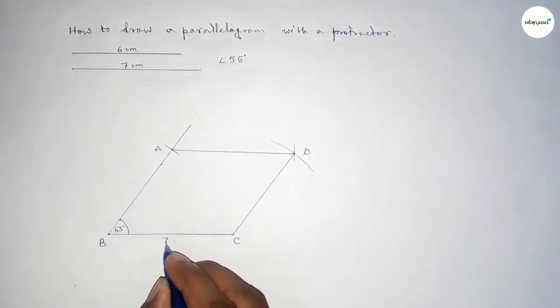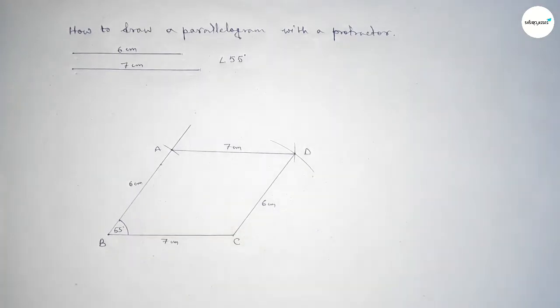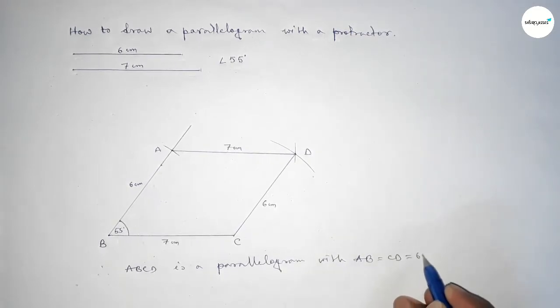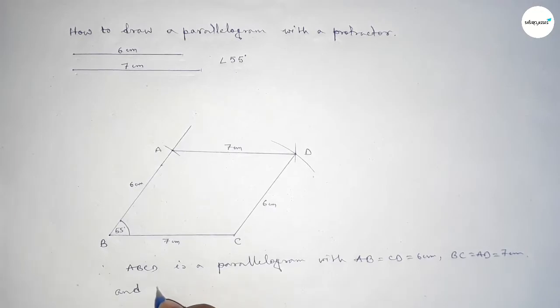So this side is 7 centimeters, this side is 7 centimeters, this side is 6 centimeters, and this side is 6 centimeters. Therefore, ABCD is a parallelogram with AB equal to CD equal to 6 centimeters, and BC equal to AD equal to 7 centimeters.